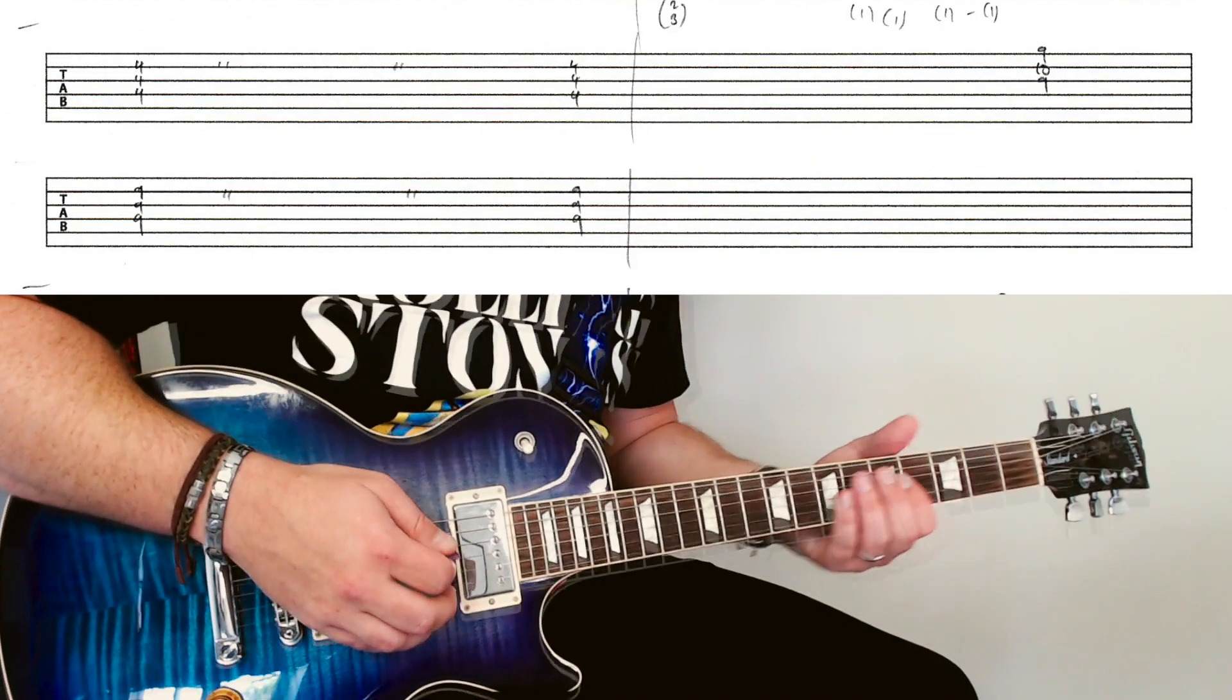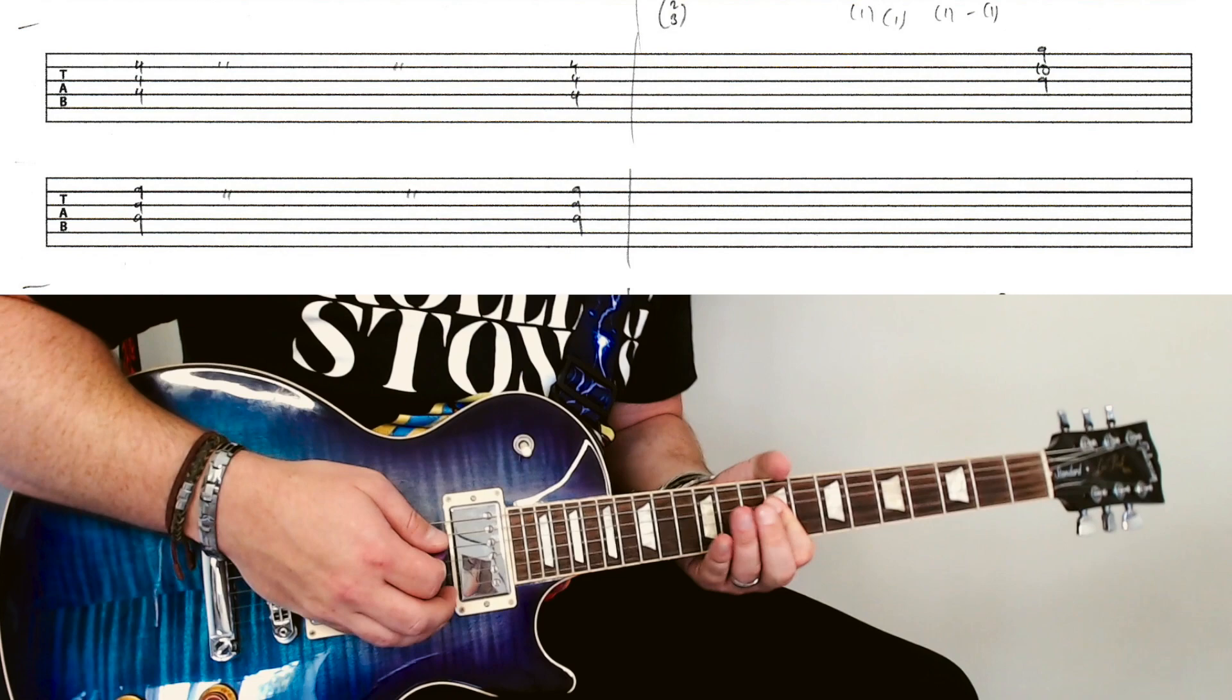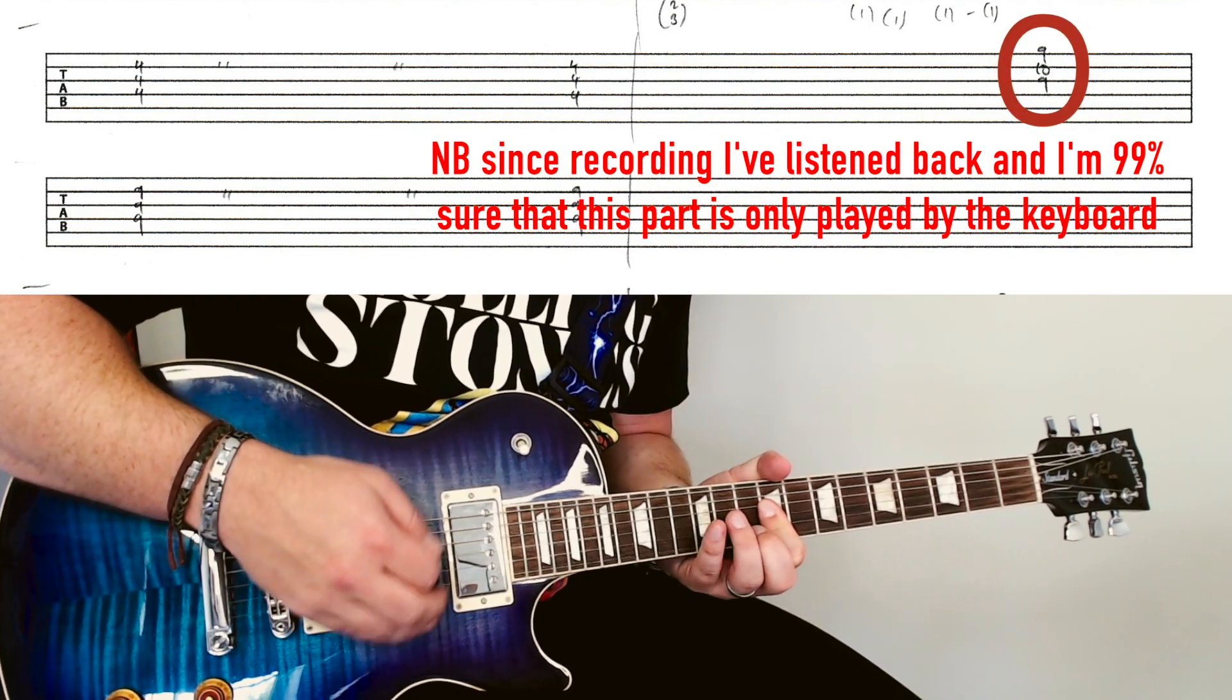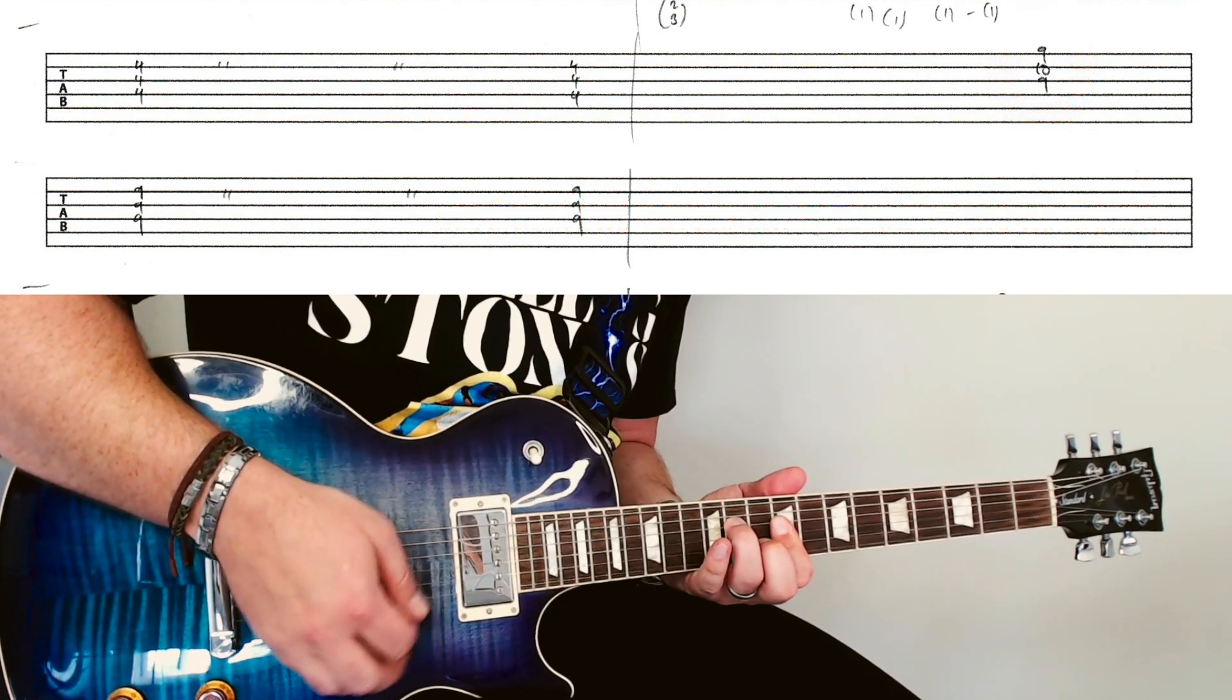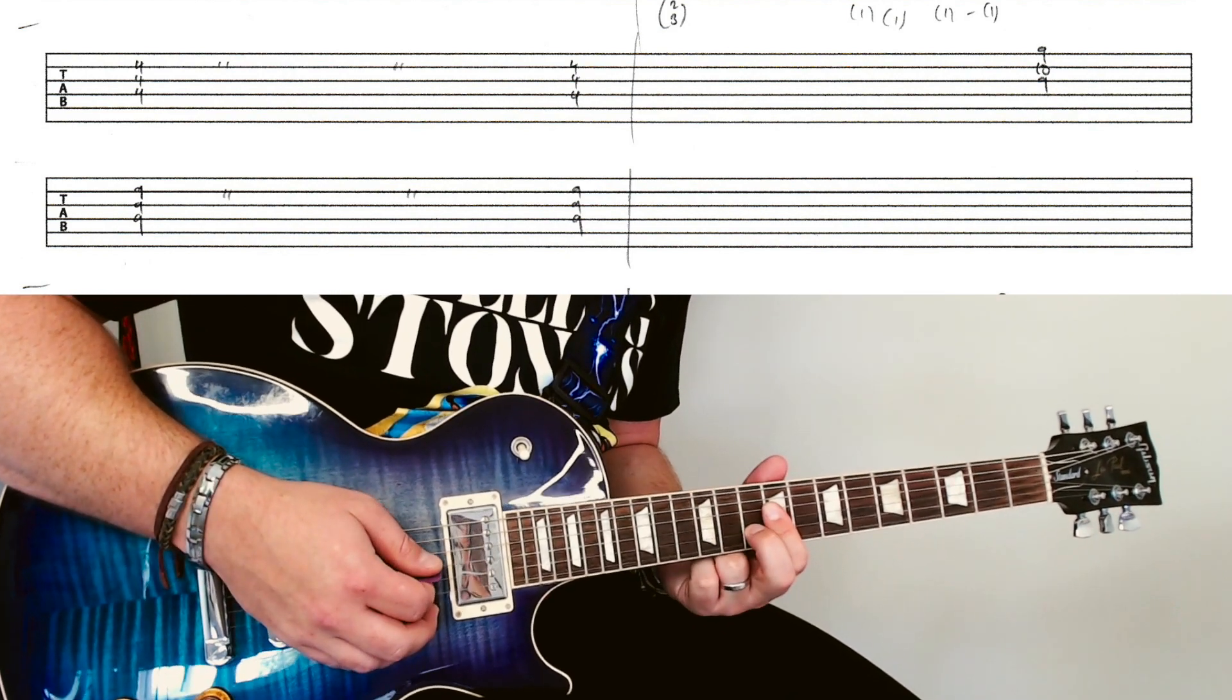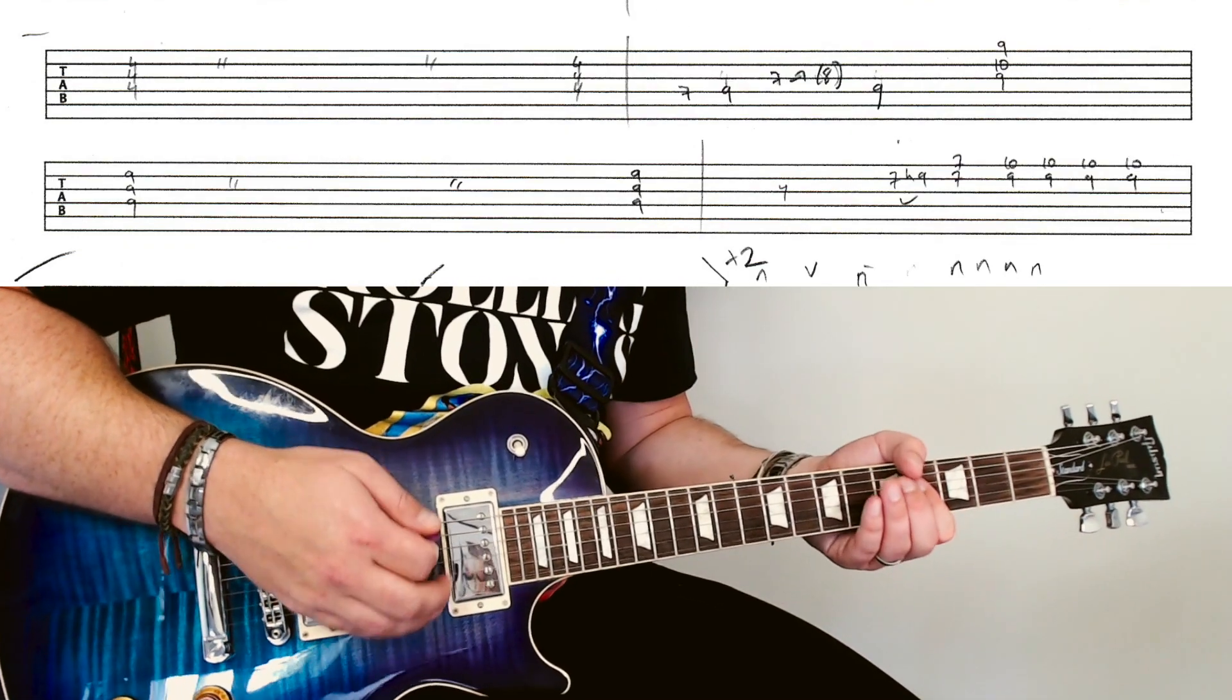Then the riff comes around again. Next time you hit the ninth fret though, just before it you have this. It's a sort of early return to the riff with this shape, but you're playing the top three strings instead. Then the riff continues again back to the four.